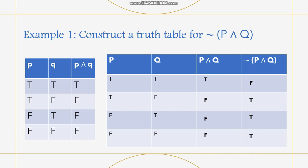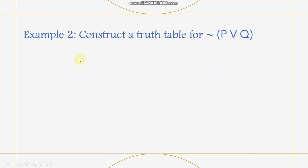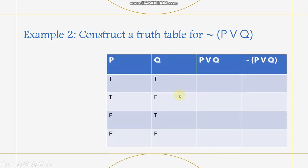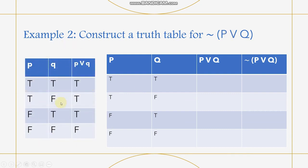Let's move forward to our second example. Construct a truth table for the negation of P or Q — this symbol is disjunction, so it is ¬P∨Q. We will use the same table again and base on the disjunction table. When true and true, the value is true. When true and false, truth is the answer. When false and true, it is truth. When both are false, the result is false.